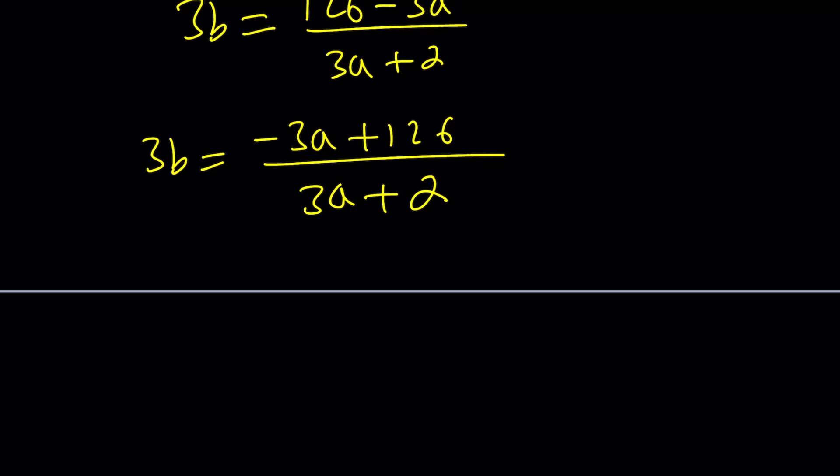When you do that, you're basically just going to multiply the numerator, and then that's going to give you 3B equals 126 minus 3A divided by 3A plus 2. My goal is to make the numerator a multiple of the denominator so that I can divide easily. Notice that negative 3A divided by 3A is negative 1. Think about multiplying this by negative 1, you should be getting negative 3A minus 2.